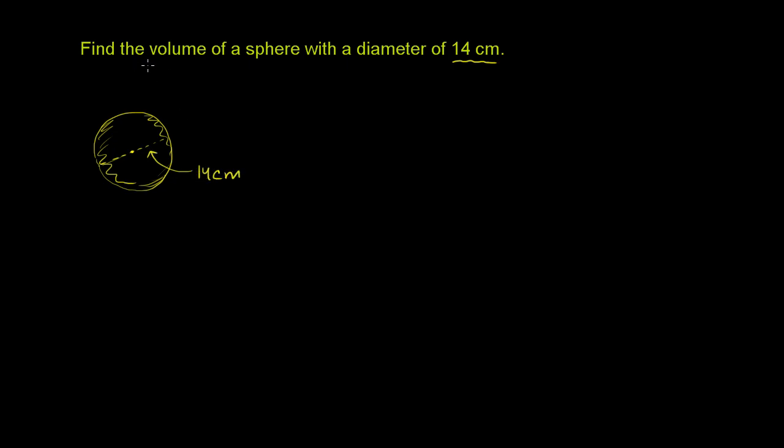Now, to find the volume of a sphere—and we prove this, or you will see a proof for this later when you learn calculus—but the formula for the volume of a sphere is volume is equal to 4/3 π r³, where r is the radius of the sphere.